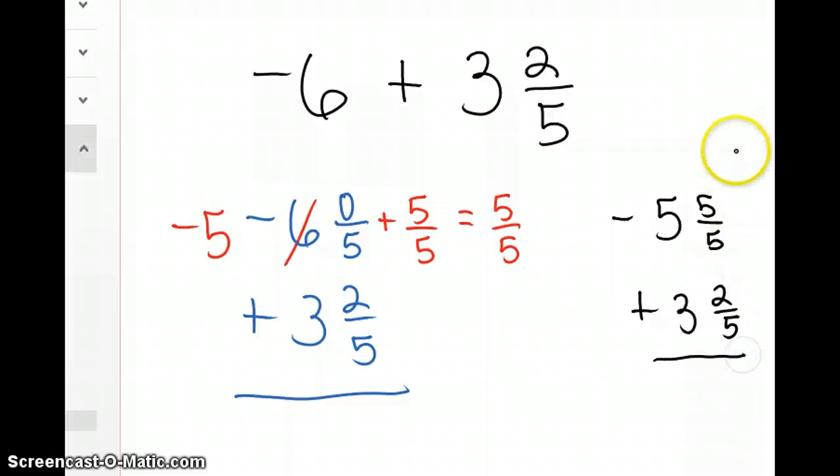And the reason I chose to work with fifths is because my number 3 and 2 fifths, that was the denominator for 2 fifths and we need to have a common denominator. Now I can subtract. 5 minus 2 gives me 3 in my numerator and I keep my denominator. 5 minus 3 is 2 and I have more negatives than positives.